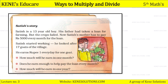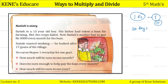Satish earns one rupee per day for one goat. How much will he earn in one month? Assuming the month has 30 days and he looks after 17 goats, he earns one rupee per goat per day. So we calculate 30 multiplied by 17.